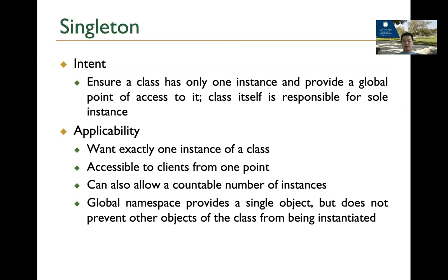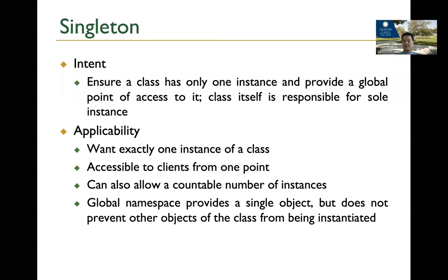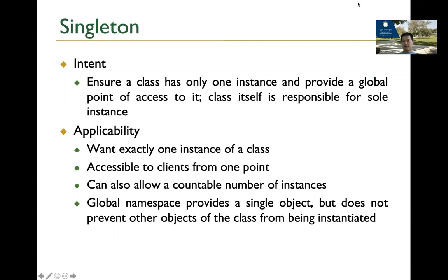Where do we apply this? Sometimes you want exactly one instance of a class — only one object. In Java, you can create a new object by calling "new," but we want exactly one instance. Also, you may want something to be accessible to a client from only one point. That's a situation where you can apply this pattern. It also allows a countable number of instances — if you want to control a specific number, this pattern can be applied as well.